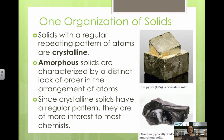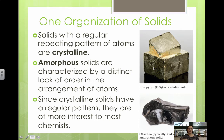The way solids are classified also has to do with how their atoms are arranged. We have either crystalline or amorphous solids. Crystalline solids have a regular repeating pattern of atoms, while amorphous solids have a lack of order in their atomic arrangement. Crystalline solids have a much more regular pattern that is easier to study, so they are of more interest to most chemists.